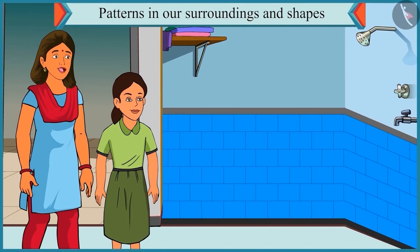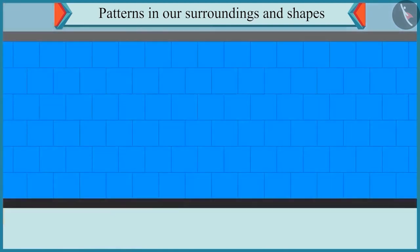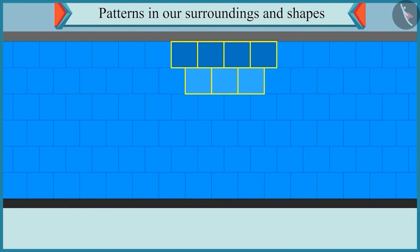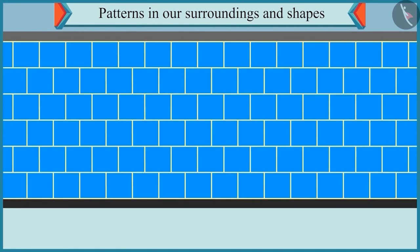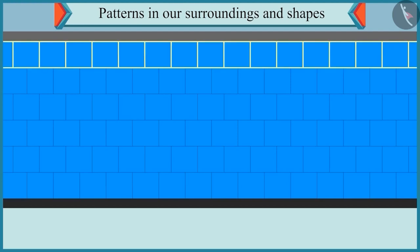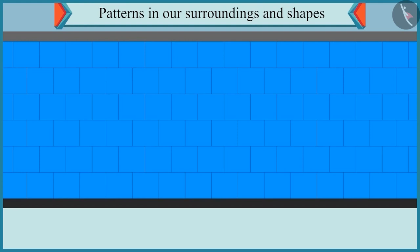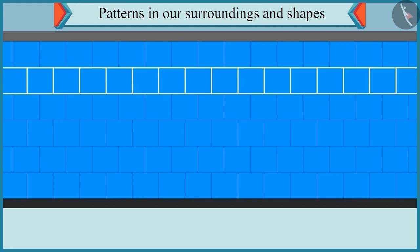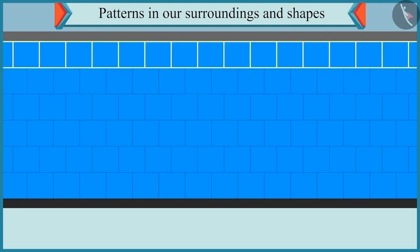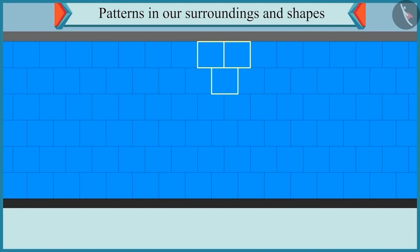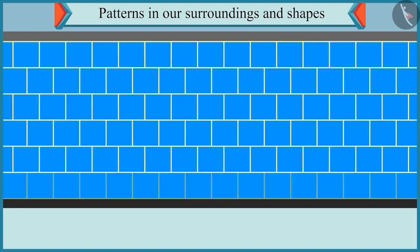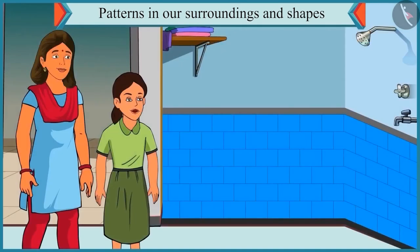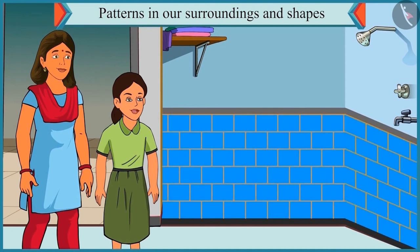Chutki, the tiles are stuck properly. Look, a pattern is made in the tiles by sticking them in this manner. Here in the first row, the tiles are laid in a uniform manner. And in the second row, the tiles are placed in between two tiles above it. And this pattern is repeated again and again. So this is a pattern, isn't it?